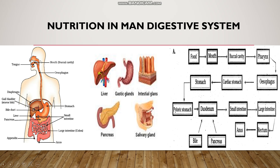These are the parts of the human digestive system along with certain associated glands such as the salivary gland that secretes saliva, liver that secretes bile, pancreas that secretes pancreatic juice, gastric glands that secrete gastric juice, and intestinal glands that secrete intestinal juice.